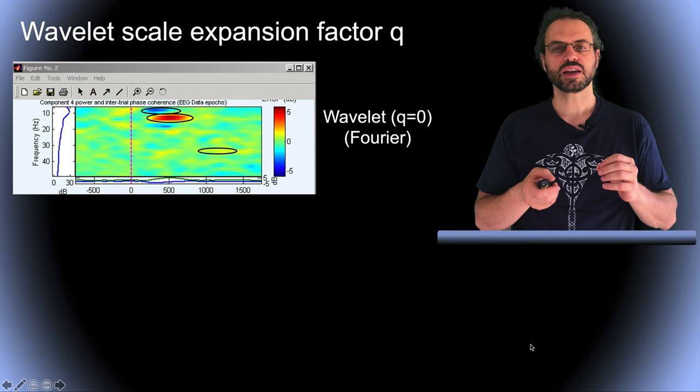And then finally, we have the multi-taper approach. For Fourier transform, we usually apply one taper, shown here, to the signal. For example, we multiply the signal by a Gaussian taper.